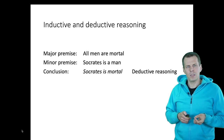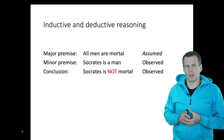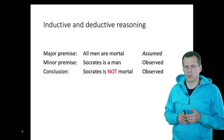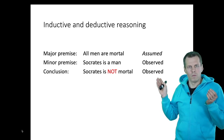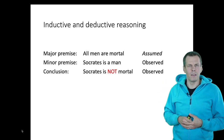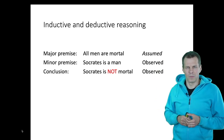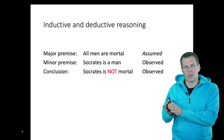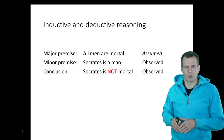How deductive reasoning applies to research: we first assume the major premise — our theory. This is commonly used in theory-testing research. We assume all men are mortal, we observe that Socrates is a man, but we observe that Socrates is not mortal. We would then infer that the major premise is incorrect. You can invalidate claims by showing that your conclusion does not correspond with your data — that is deductive reasoning.